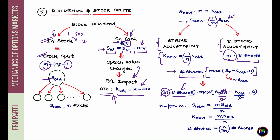For a general n-for-m split — for example, three shares split into five is a five-for-three split — the adjustments are: the new stock price becomes (m/n) times the old stock price; the new strike price also becomes (m/n) of the old strike price; and the new number of shares is (n/m) of the original number of shares.